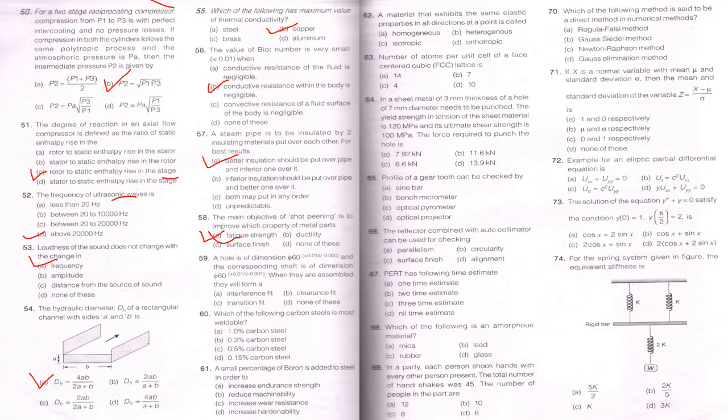A hole is dimensioned when assembled. They form, correct answer C. Which of the following carbon steel is most weldable. A small percentage of boron is added to steel in order to. A material that exhibits the same elastic properties in all directions at a point is called, correct answer C, isotropic.